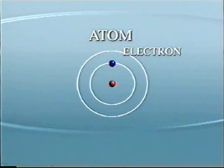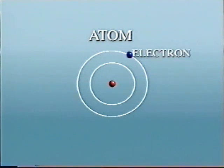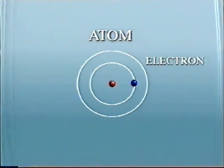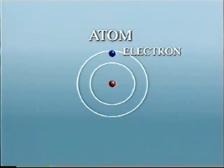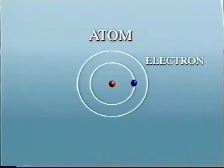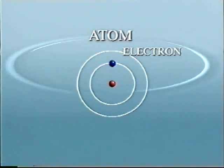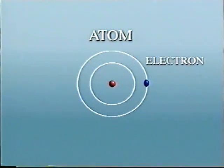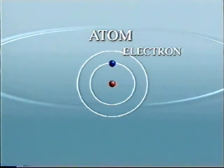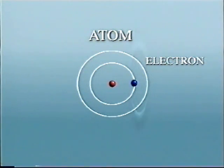Light is produced when the electrons in an atom are disturbed. Electrons are little bits of electricity making up the outside of the atom. When they are disturbed, they produce a pulse of electromagnetism. This pulse is known as a photon and is the smallest piece of light you can have.